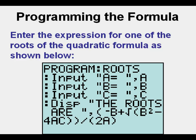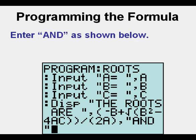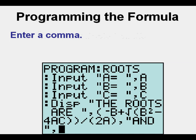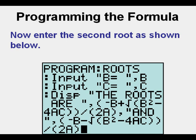Enter the expression for the first root of the quadratic formula: open parentheses, negative B, plus, square root of B squared minus 4AC, close double parentheses, divide, open parentheses, 2A, close parentheses. Enter a comma, then the word AND in quotation marks, then another comma. Enter the second root: open parentheses, negative B, minus, square root of B squared minus 4AC, close double parentheses, divide, open parentheses, 2A, close parentheses.